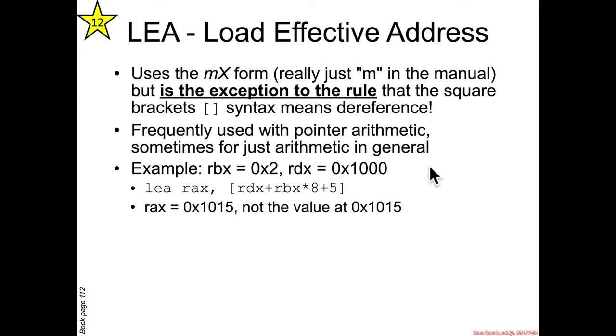Just as an example, if you imagine that you had RBX having two, RDX having hex 1000, then this calculation, this LEA would say 1000 plus two times eight, which is hex 10 plus five. And so it would calculate up hex 1015 and put that into the RAX register. It wouldn't dereference memory, it wouldn't treat that as an address, it would just treat it as a value that's going to be loaded into the register specified.